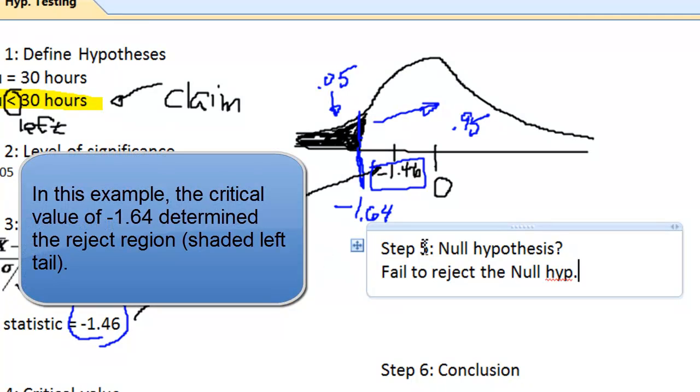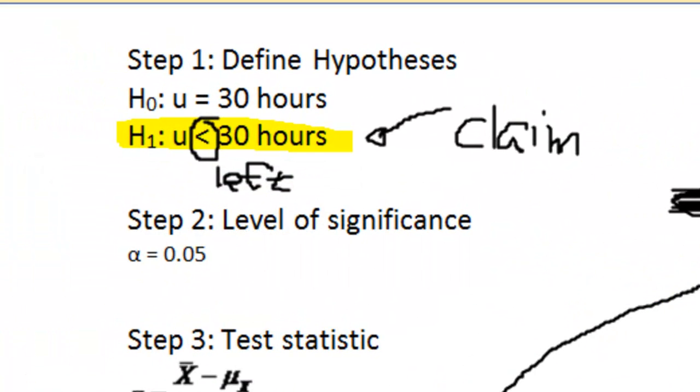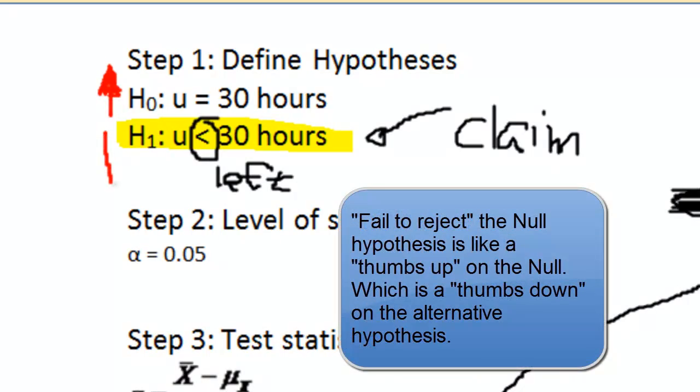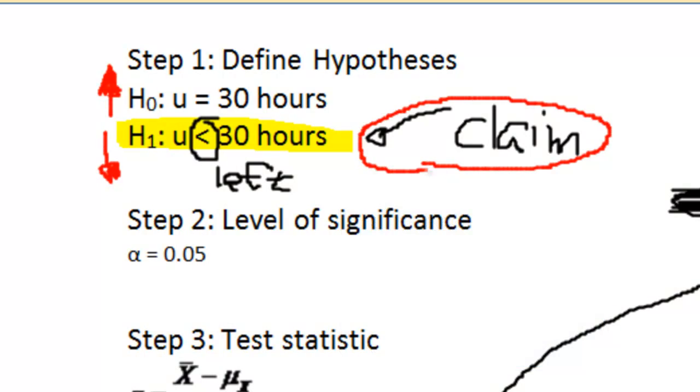We're not in the reject region. I'm failing to reject. And what I like to do sometimes here is, if I'm failing to reject the null, then going back to step one, I like to sometimes put an arrow going up, almost like a thumbs up on the null, saying I'm not rejecting you, and in essence, I'm rejecting the alternative. It's like a thumbs down on the alternative, which means I just thumbs down, I just rejected the claim - the claim was the alternative. If I am failing to reject the null, then I am rejecting the alternative. I don't have enough evidence to support the claim. In this particular case, that's where the claim is, it's in the alternative.